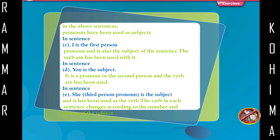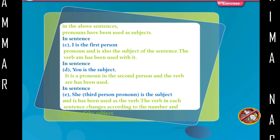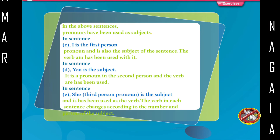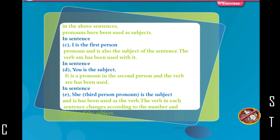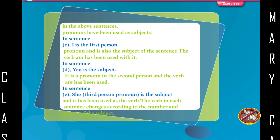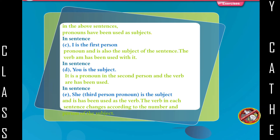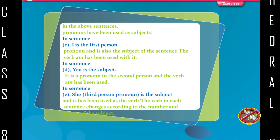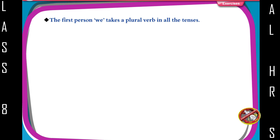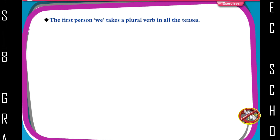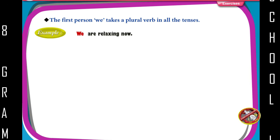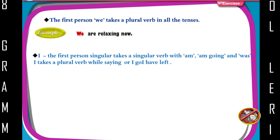Examples: They have presented a play. They are reading books. The second person 'you' always takes a plural verb in all the tenses, even if it refers to a single person. Examples: You are a talented person. You all are invited to the party. The first person 'we' takes a plural verb in all the tenses. Example: We are relaxing now.